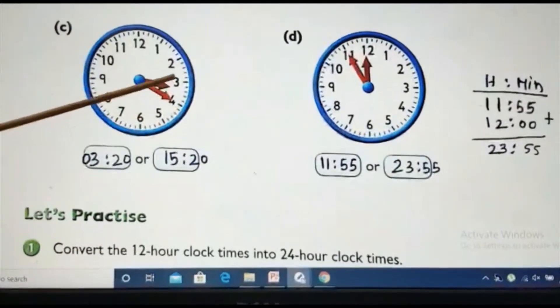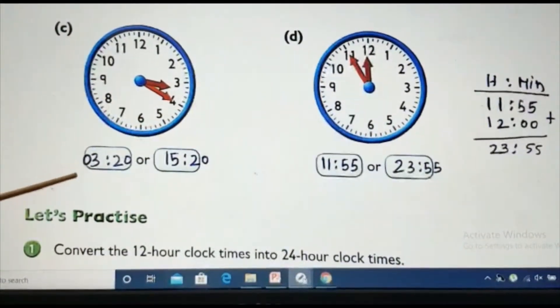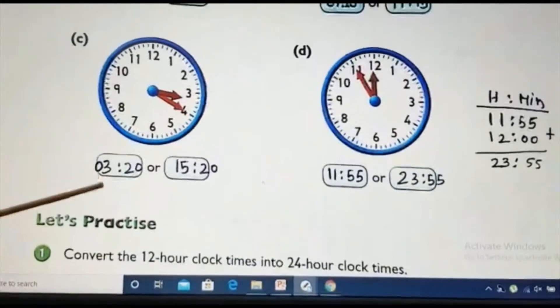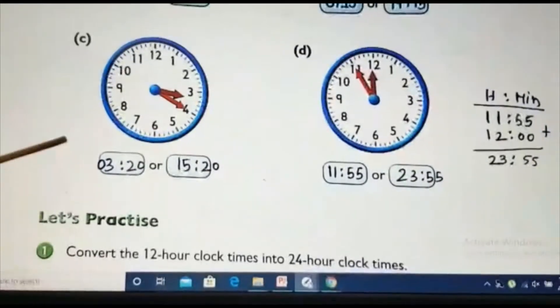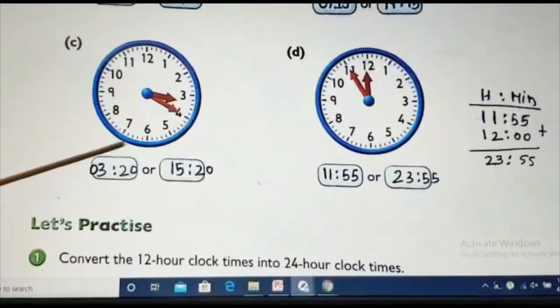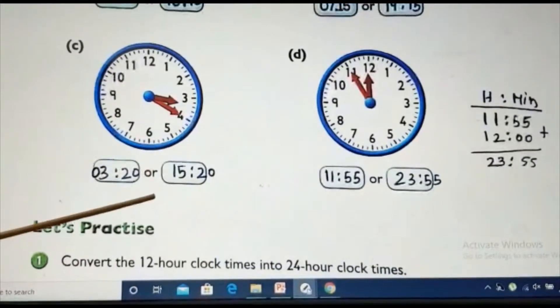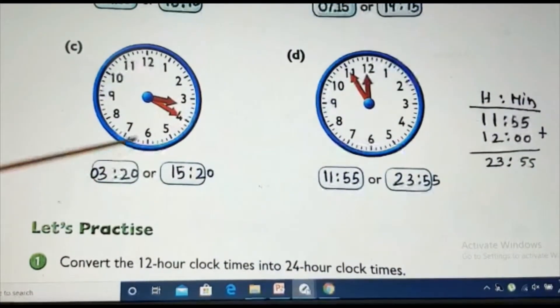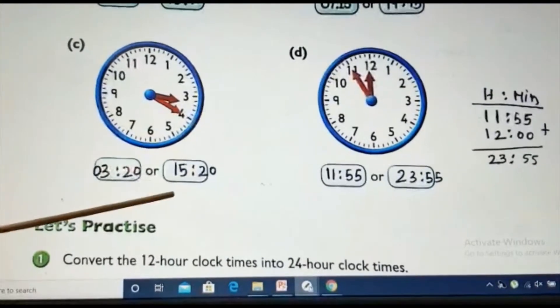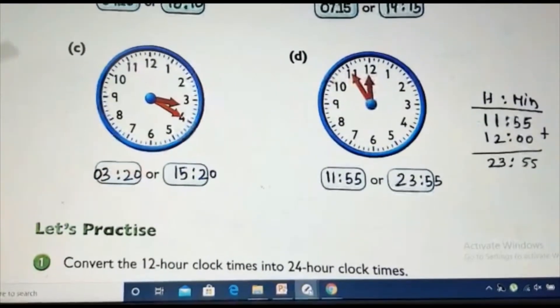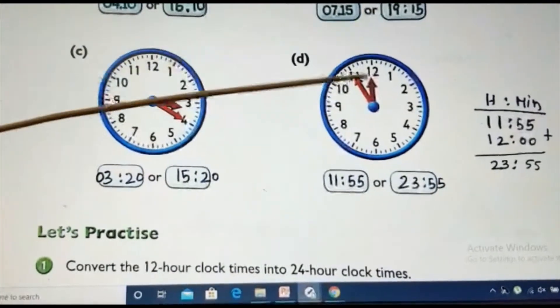Here, nothing is given. We know it is 3:20. One is 03:20. If you write just 3:20 in 24 hour clock, it will be wrong because only three digits. We need four digits. Or, this will be what? 3:20 plus 12. So, it is 15:20. Minutes will remain the same. It will not change. Same here.